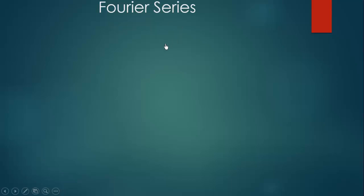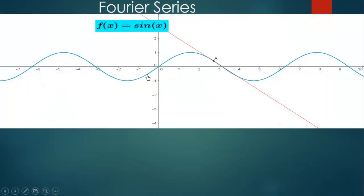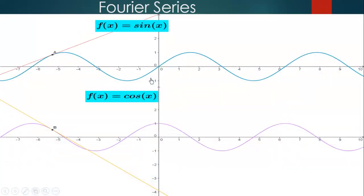Fourier series is about approximating the value of a given function using the sine and the cosine functions. We know that these two functions are periodic functions, meaning that after every 2 pi, they repeat themselves.